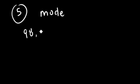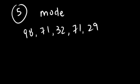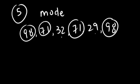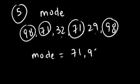Problem 5 asks for the mode for a list of data. The values are 98, 71, 32, 71, 29, and 98. The mode is the most popular data value. We see that 98 is listed twice and 71 is listed twice, while 32 and 29 are only listed once each. So there are two modes, meaning the data set is bimodal. The mode is 71 and 98.